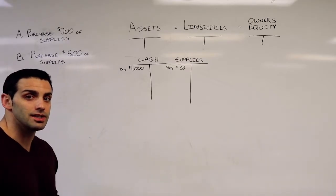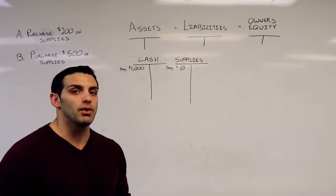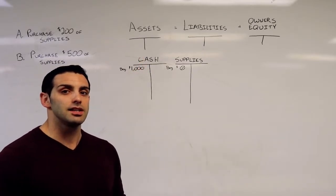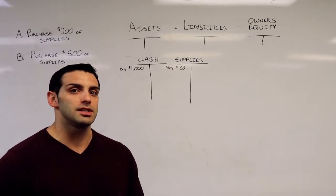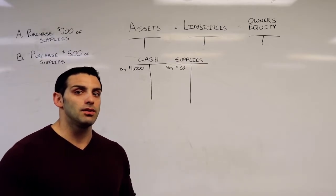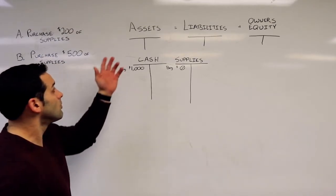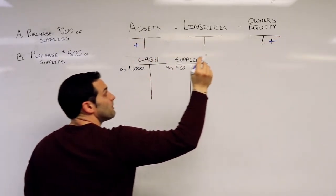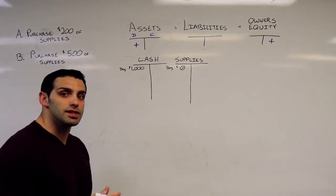I have a couple of sample transactions here and a couple of T-accounts. Before we get started, I'm going to put up what I like to call my T-account cheat sheet up top here. You can see we have the accounting equation: assets equals liabilities plus owner's equity. It's really helpful right off the bat, before we even start making journal entries, to know which account increases with the debit and which account increases with the credit. The debit is always on the left, credit is always on the right.